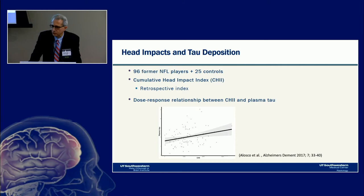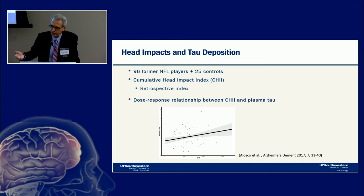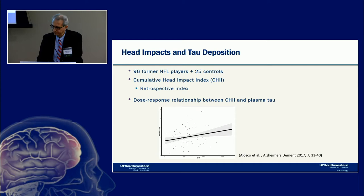A 2017 study by Lasco et al. examined 96 former NFL players and 25 controls, again using the Cumulative Head Impact Index as a retrospective measure of total impact exposure. They measured plasma tau and found an interesting dose-response relationship between the Cumulative Head Impact Index and plasma tau levels in these former players.